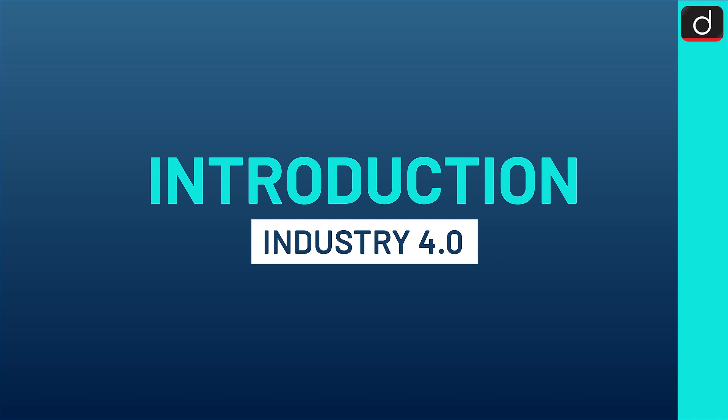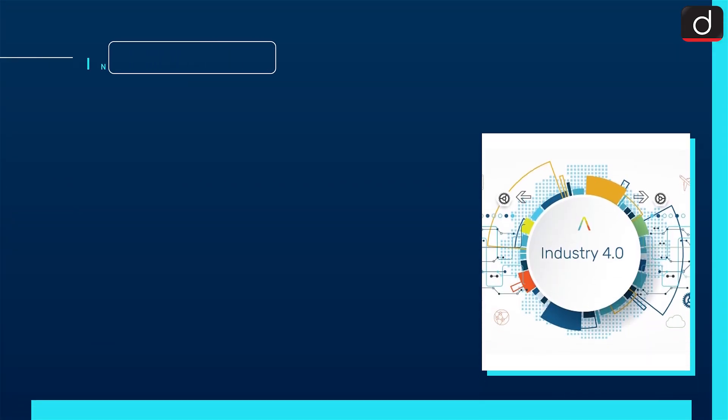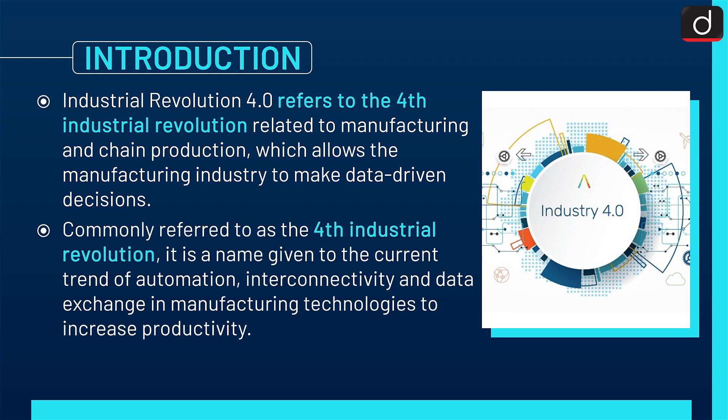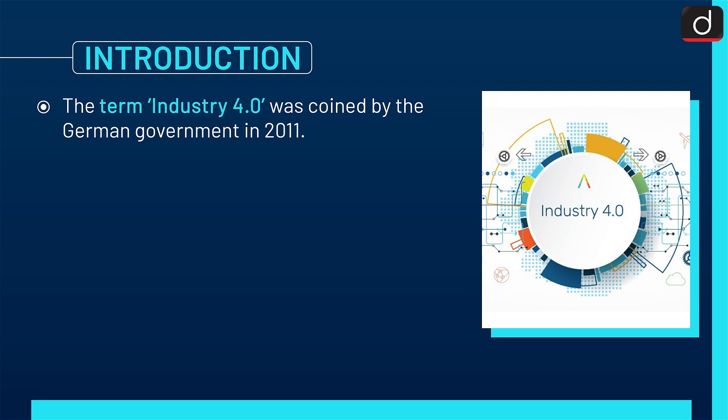Let's begin with a brief introduction. Industry 4.0 refers to the fourth industrial revolution related to manufacturing and chain production, which allows the manufacturing industry to make data-driven decisions. Commonly referred to as the fourth industrial revolution, it is a name given to the current trend of automation, interconnectivity, and data exchange in manufacturing technologies to increase productivity. The term Industry 4.0 was coined by the German government in 2011.